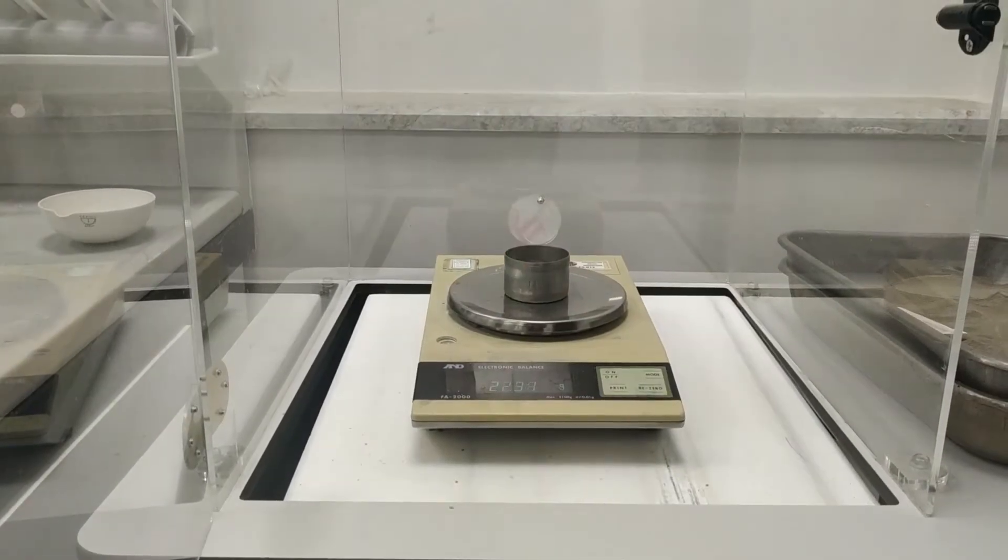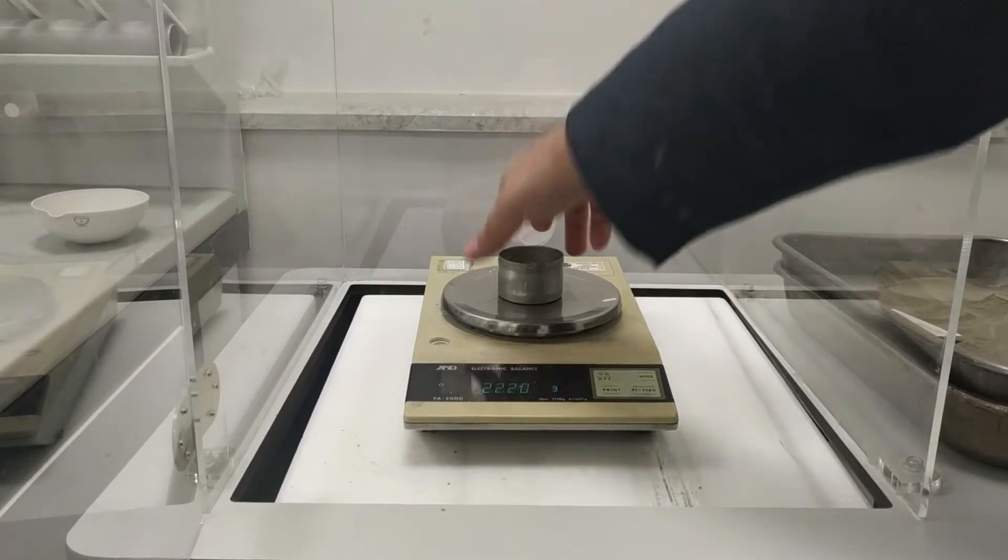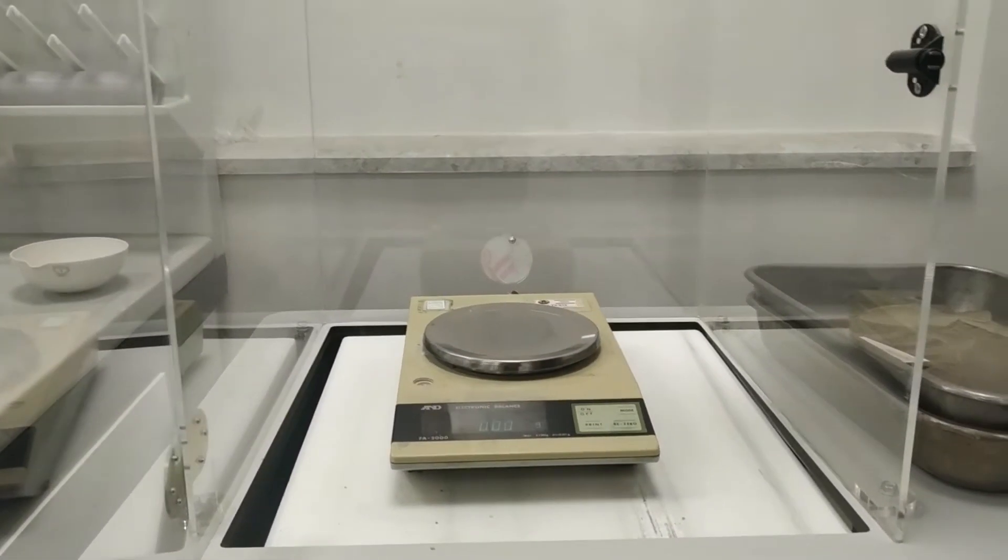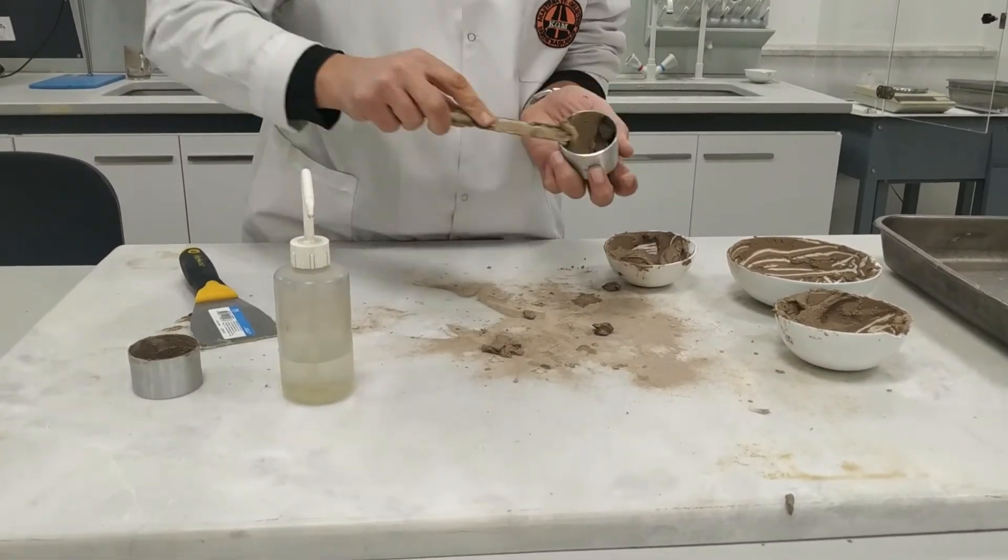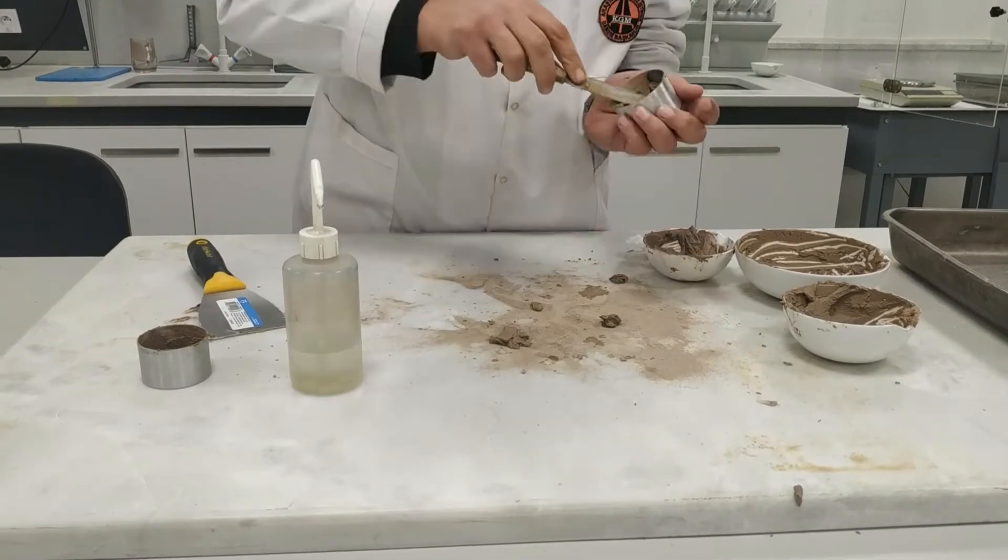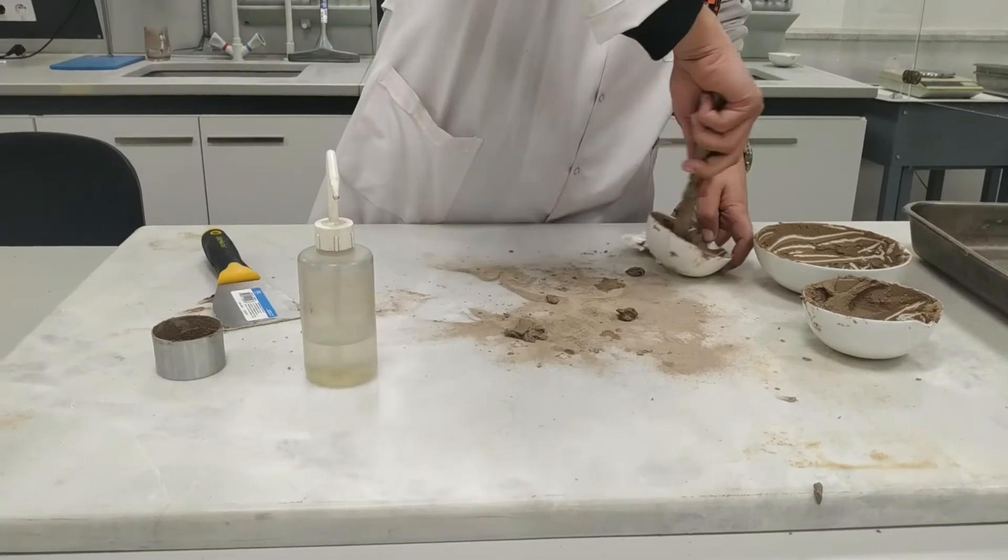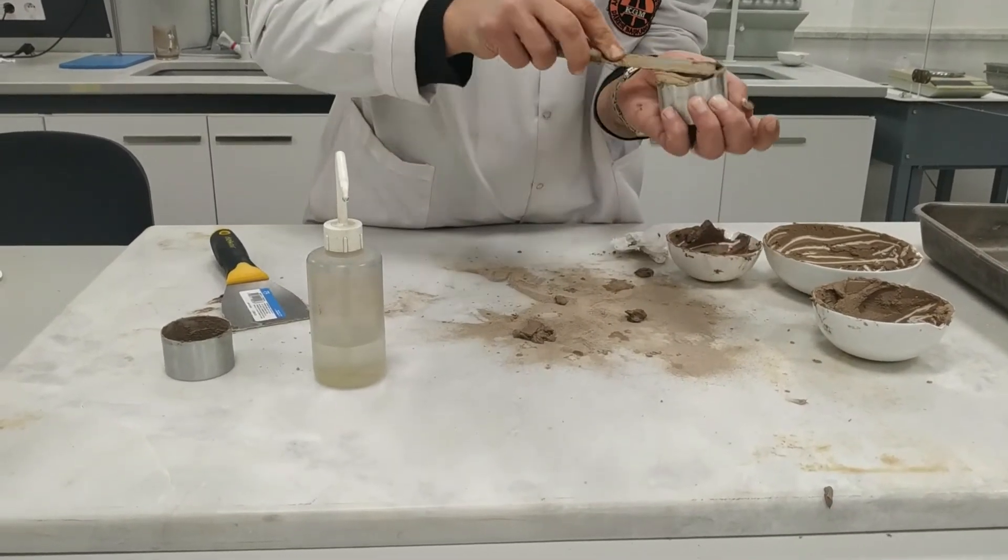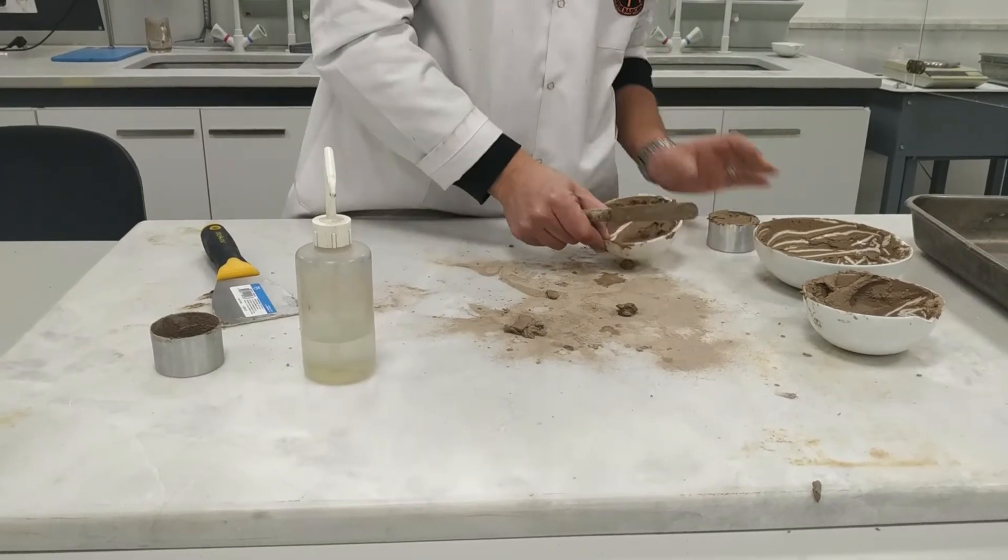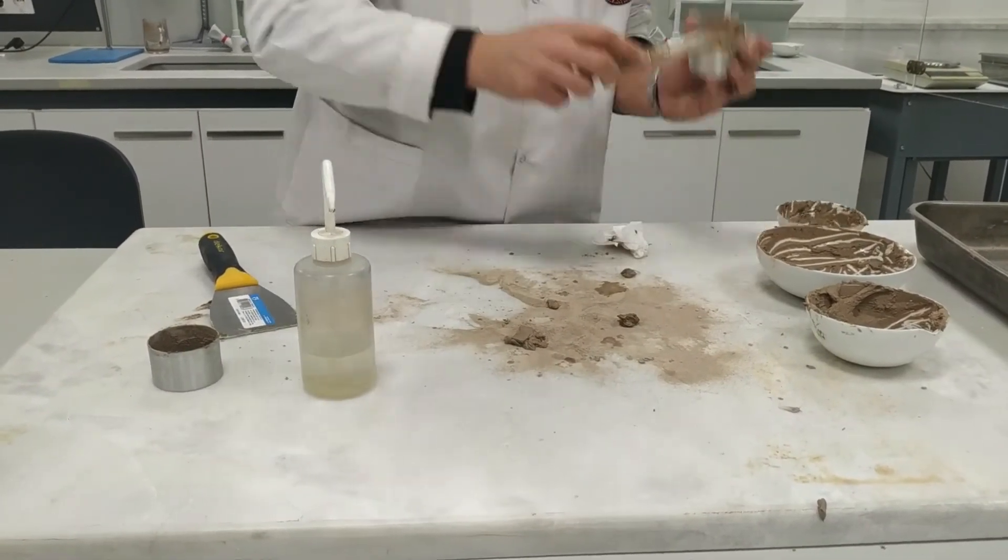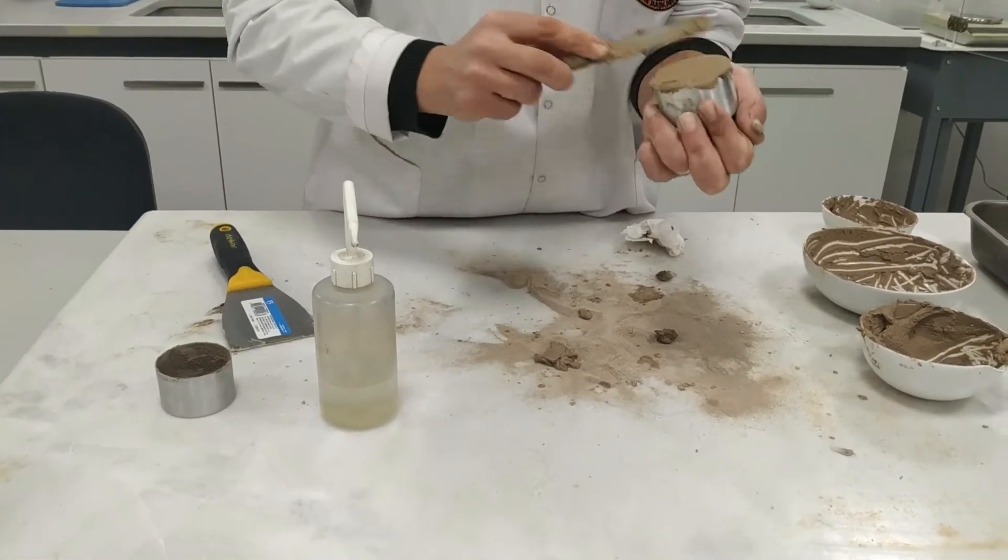The liquid limit should be determined as soon as possible after remolding. Place a portion of the prepared remolded soil into a clean and dry cup with a spatula, taking care not to trap air. Strike off excess soil with a straight edge to give a smooth level surface. Note that the liquid limit is influenced by any trapped air bubbles when remolding or placing the paste into the cup or by insufficient remolding.